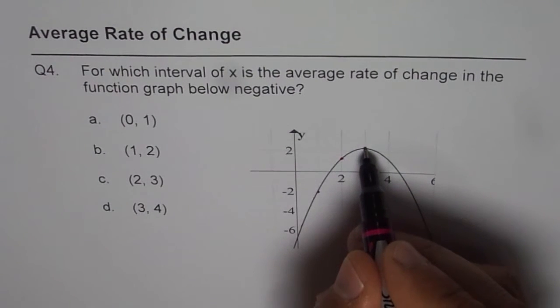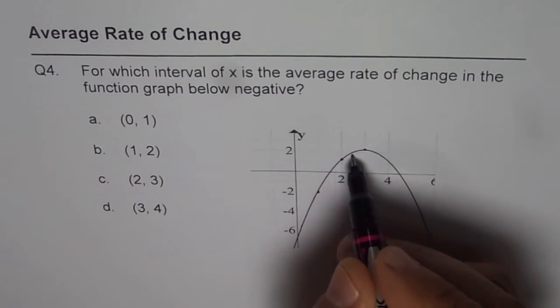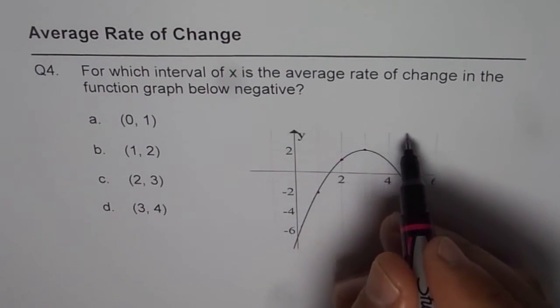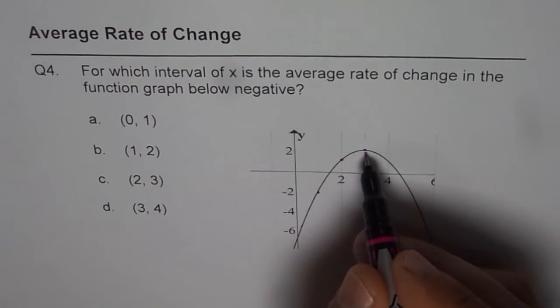From 2 to 3, 3 is the maximum. That is also a rising line, going upwards. So that represents a positive average rate of change.